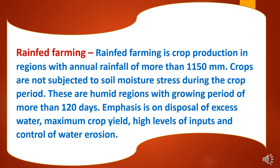What is rain-fed farming? Rain-fed farming is crop production in regions with annual rainfall of more than 1,150 mm. Crops are not subjected to soil moisture stress during the crop period. These are humid regions with a growing period of more than 120 days. Emphasis is on disposal of excess water, maximum crop yield, high level of inputs, and control of water erosion.